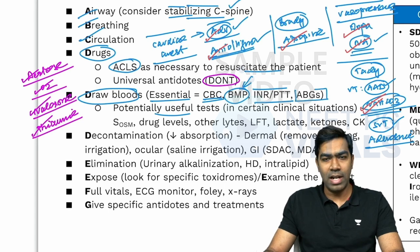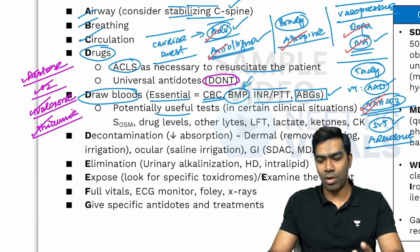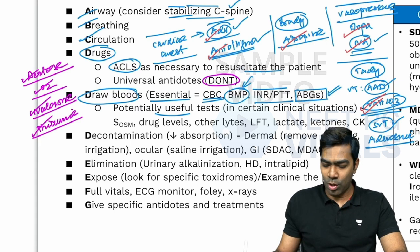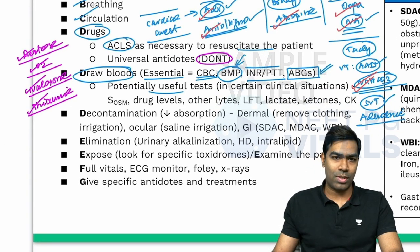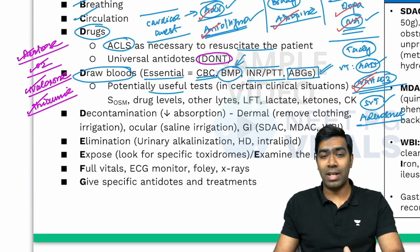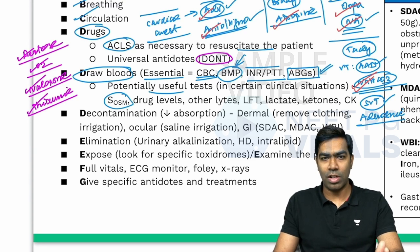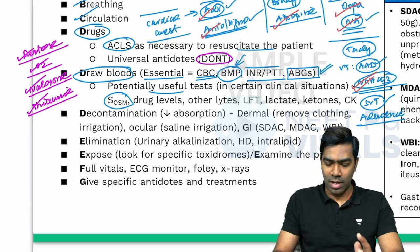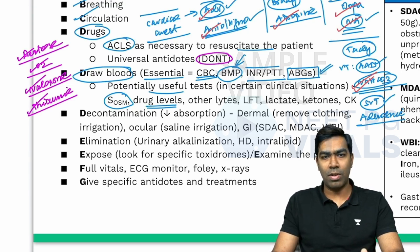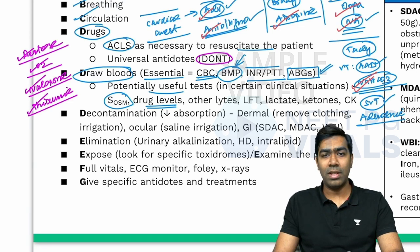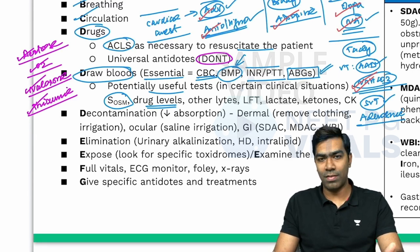Potentially useful tests for selected situations include: if suspecting toxic alcohol poisoning, serum osmolality is very useful to look at the osmolar gap — we'll discuss that in the next section. You may also need specific drug levels such as salicylate levels, paraquat levels, cholinesterase levels in OPC poisoning, valproate levels, phenytoin levels, digoxin levels, or lithium levels.